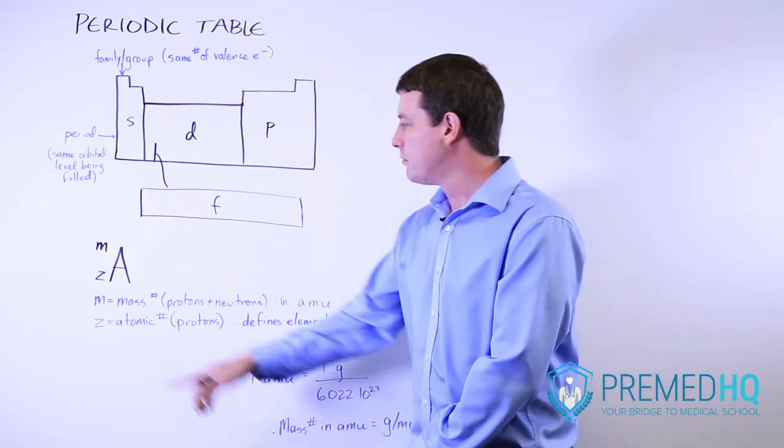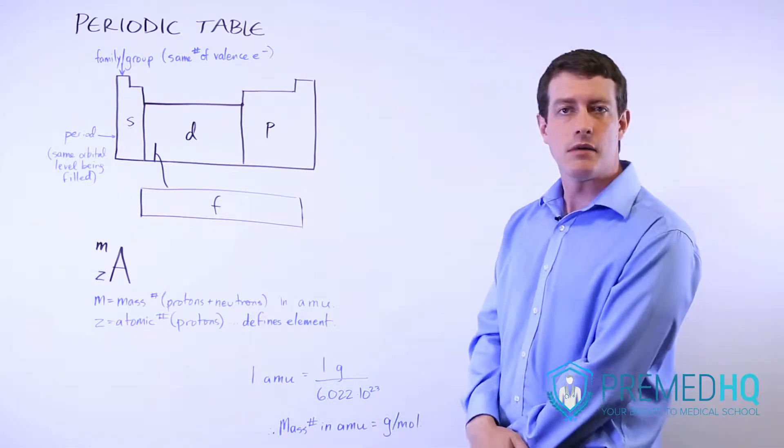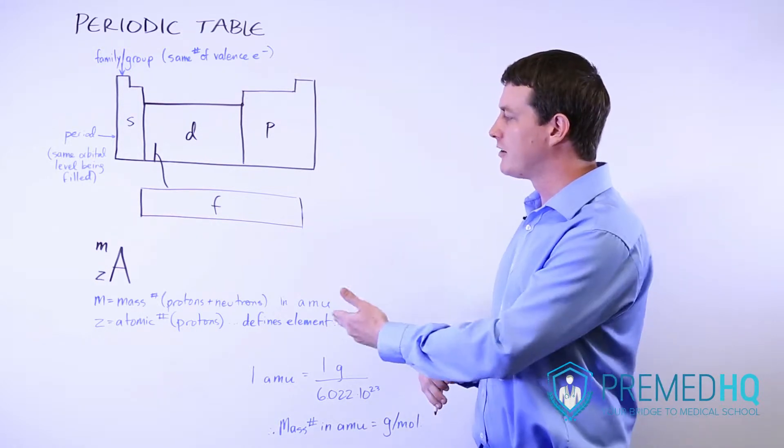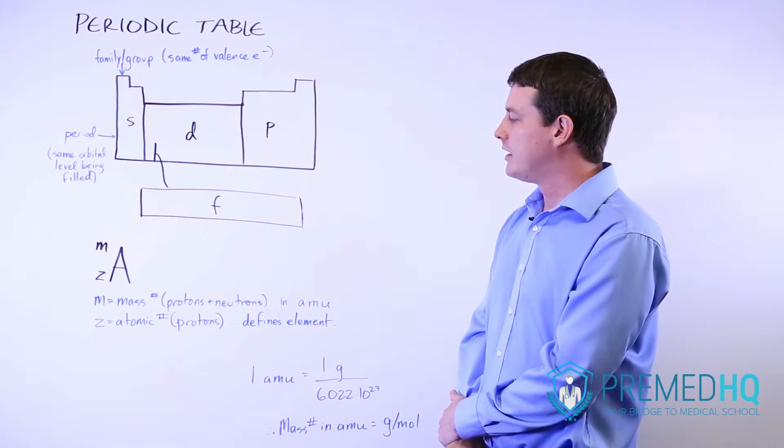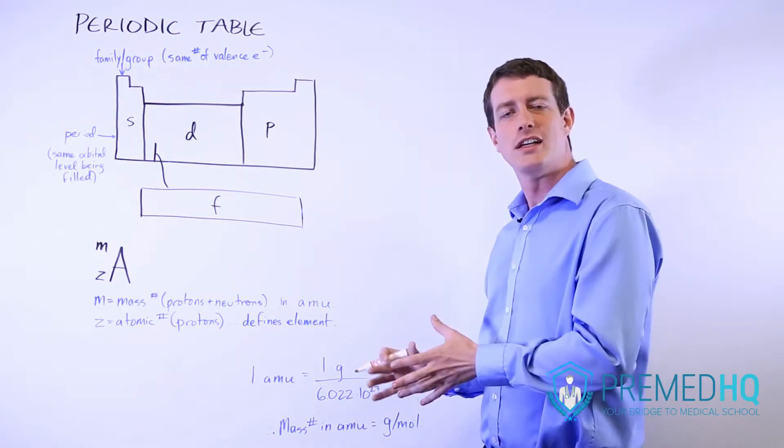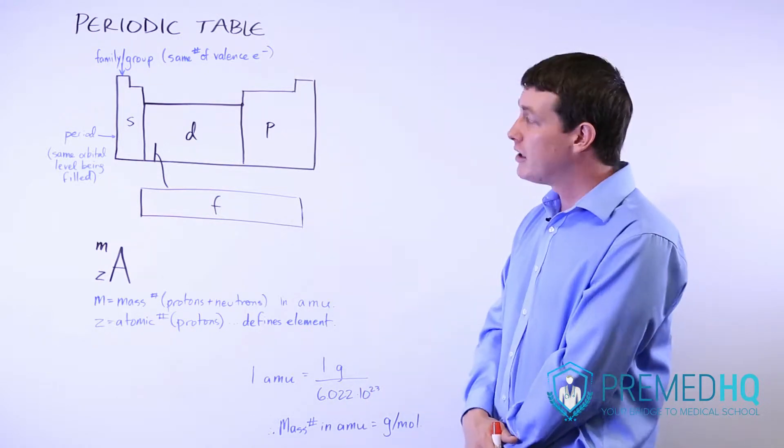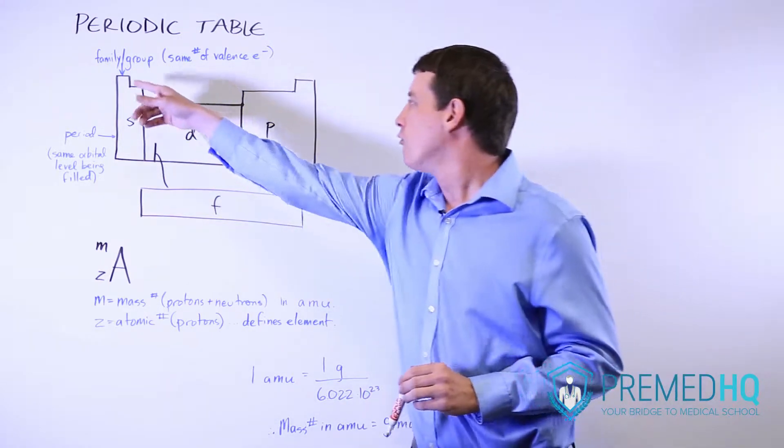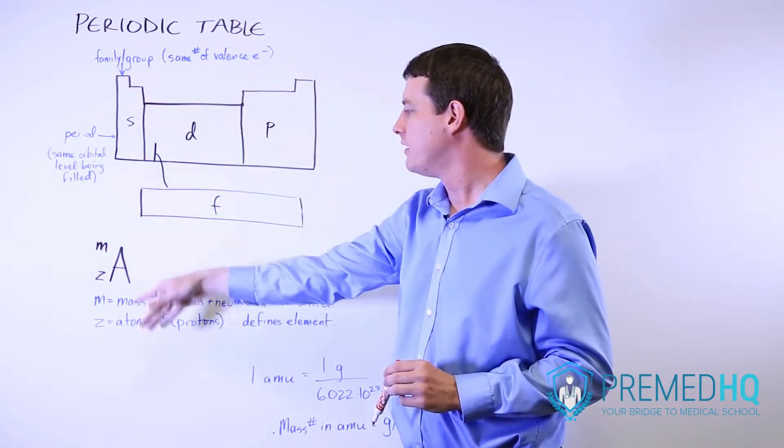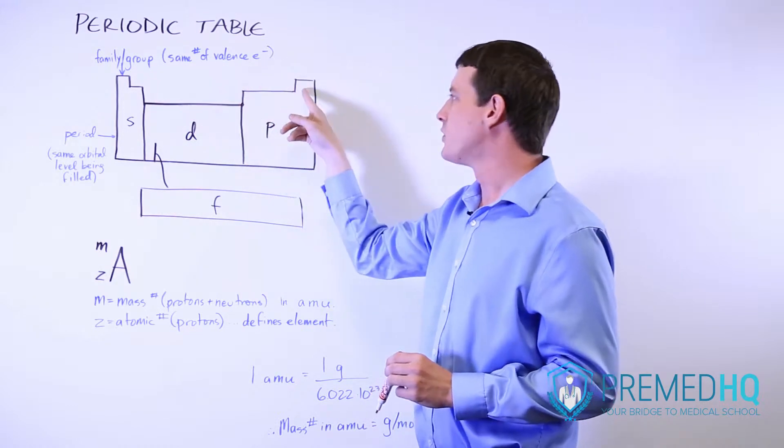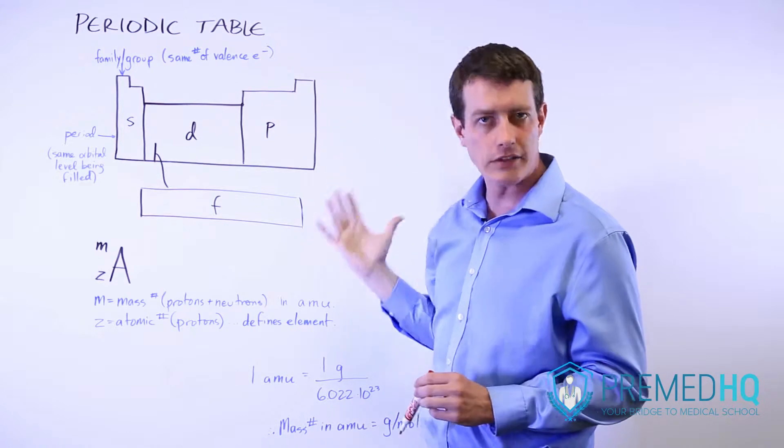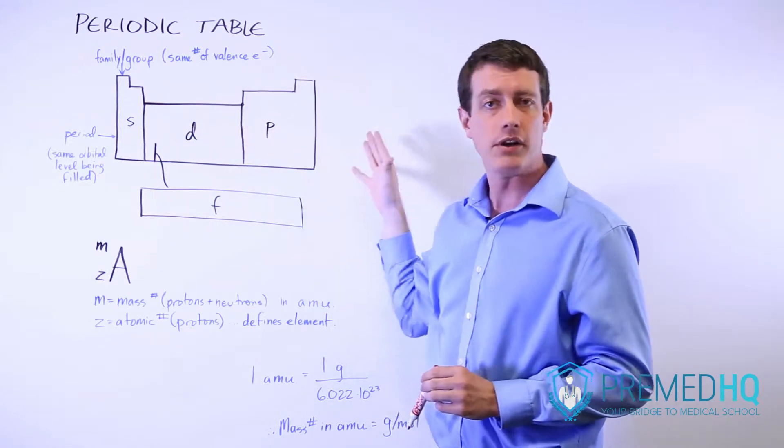Now the bottom number is the atomic number or z, and that is the number of protons. The protons are what define that particular atom or that particular element, and so the number of protons is what tells you whether something is lead or tin or hydrogen or something else. The periodic table is arranged in order of increasing atomic number. So it starts with hydrogen which has one proton, moves over to helium, and then it increases from lithium three, four, five, six, seven, and so on throughout the entire periodic table.